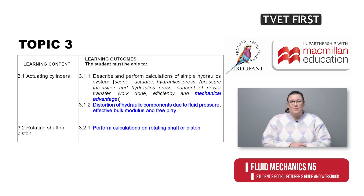Topic 3 closely matches section 7.6 in the old syllabus and now also includes mechanical advantage as a concept of power transfer. The distortion of hydraulic components is new. Also new are calculations for rotating shafts or pistons.